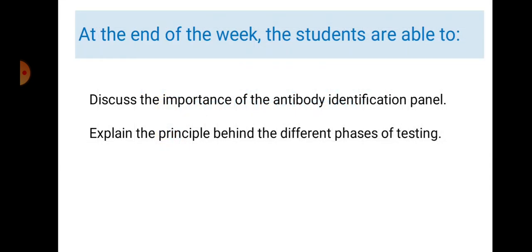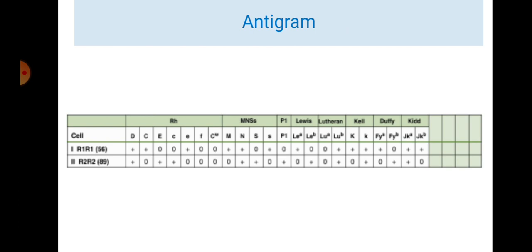Our objectives for the week: first is to discuss the importance of the antibody identification panel, and second is to explain the principle behind the different phases of testing. This picture is an example of an antigram for a two-cell screen. An antigram lists the antigens present in the reagent red cell suspension. A reaction to one or both of the screen cells demonstrates the presence of an atypical antibody. Some workers prefer the three-cell screen because it provides a D-negative cell and homozygous cells for the Duffy and Kidd blood groups. The most common clinically significant antibodies react with a two-cell or three-cell screen, and initial conclusions regarding the type of antibody can often be made when the antibody screen is complete.